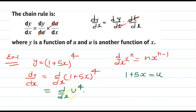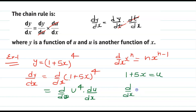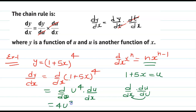So dy over dx becomes d over du of u to the power 4 times du over dx. We multiplied by du in numerator and denominator and replaced dx. So we have d over du of u to the power 4. Using d over dx of x to the power n equals nx to the n minus 1, we get d over du of u to the power 4 equals 4u to the power 3.